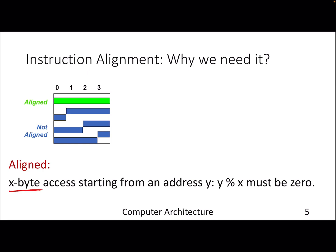Let's say you want to access four bytes from an address, let's say seven. Then it says that seven modulo four should be zero, then only it becomes an aligned access. In this case it's not, but if I make it address eight, then eight modulo four will become zero, then that becomes an aligned access.